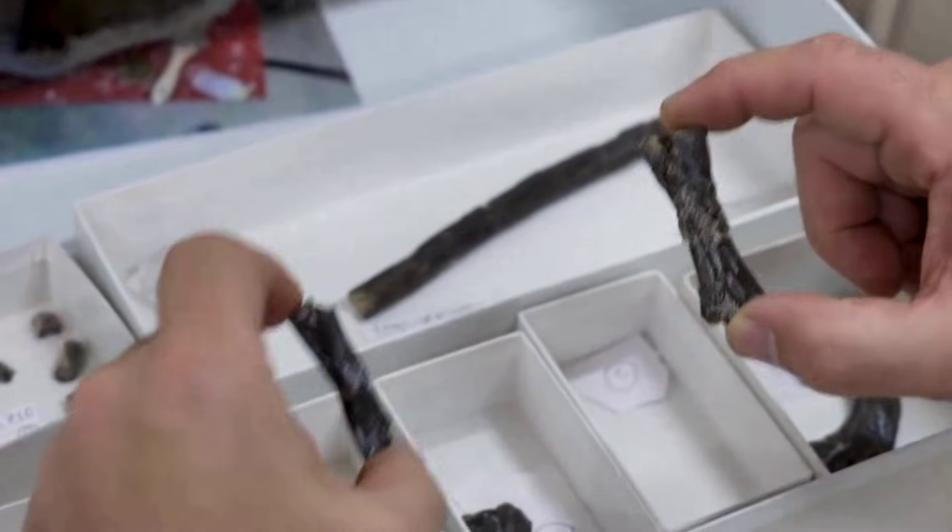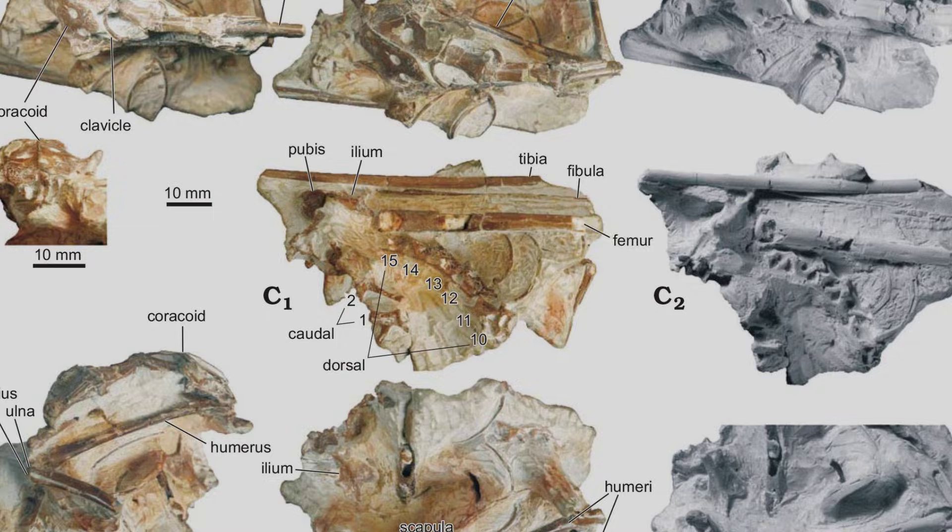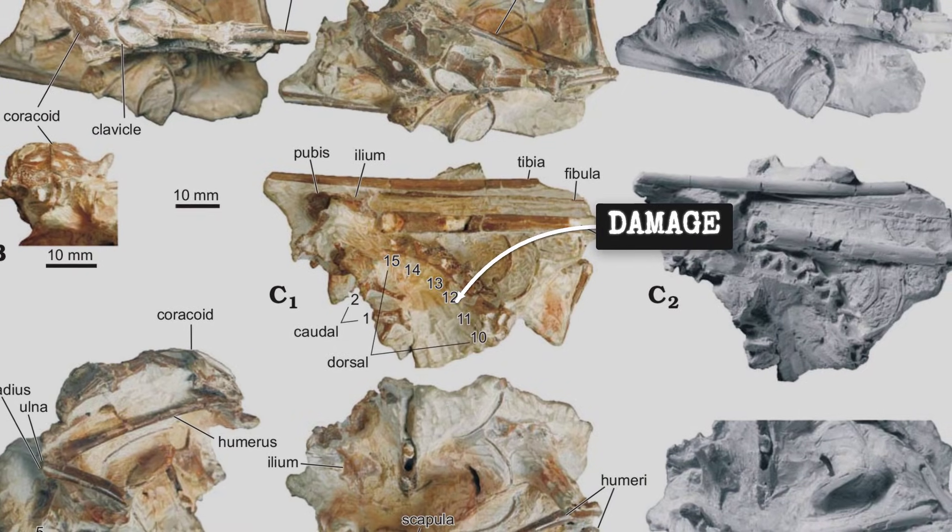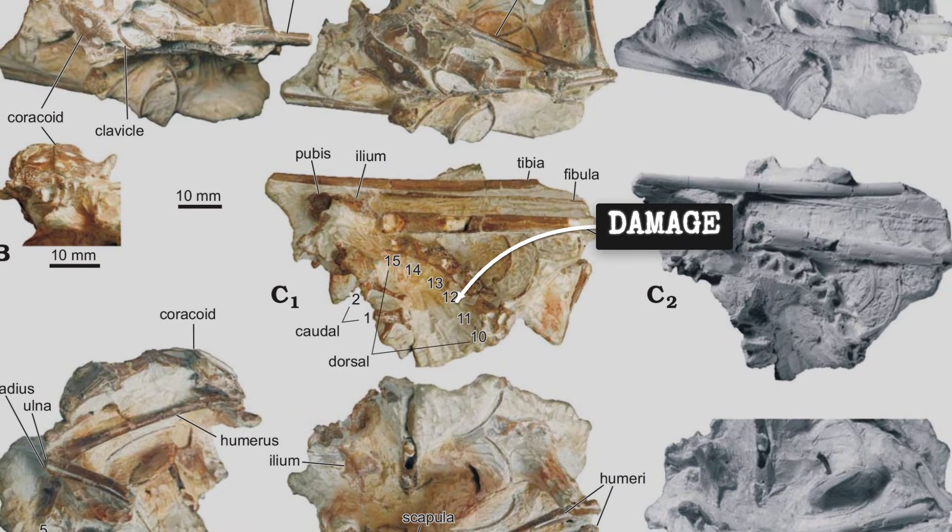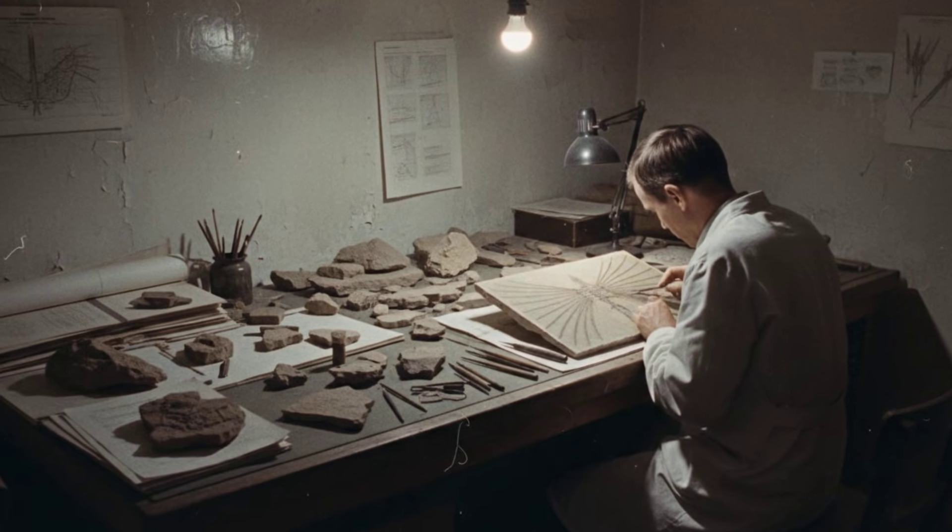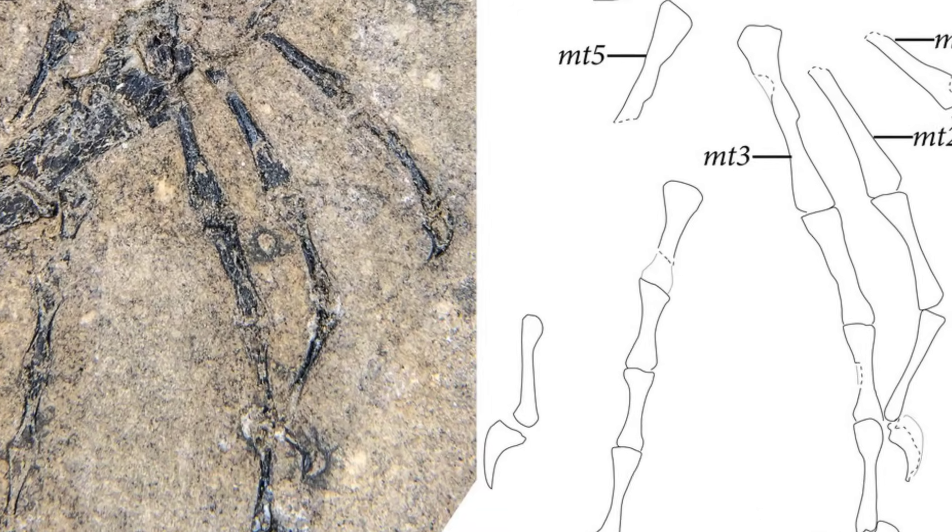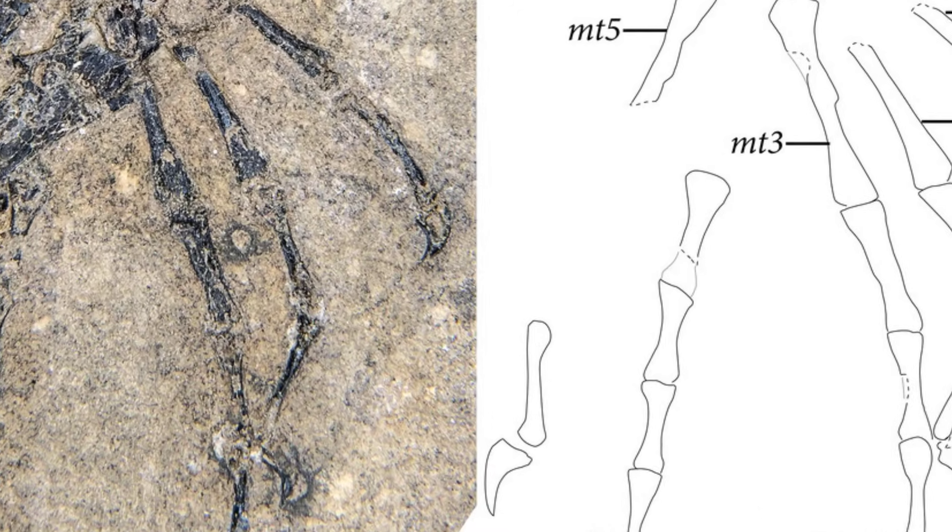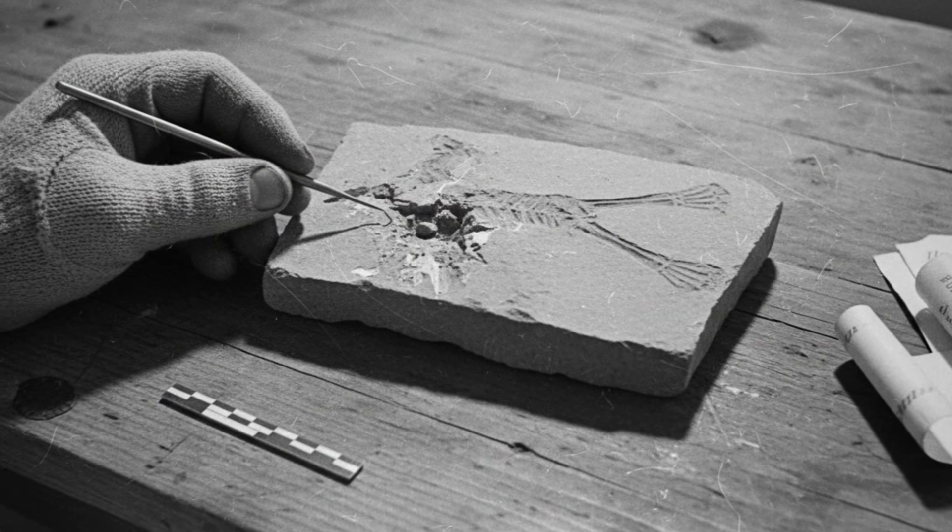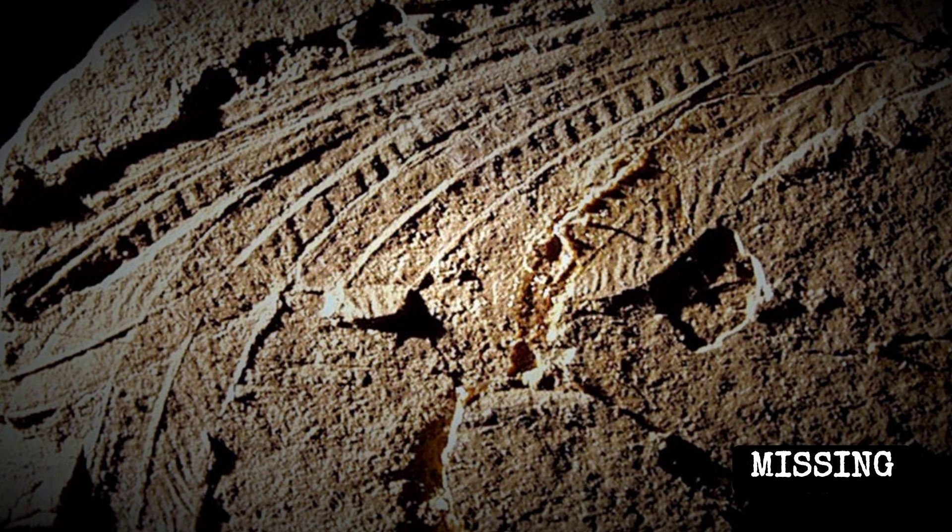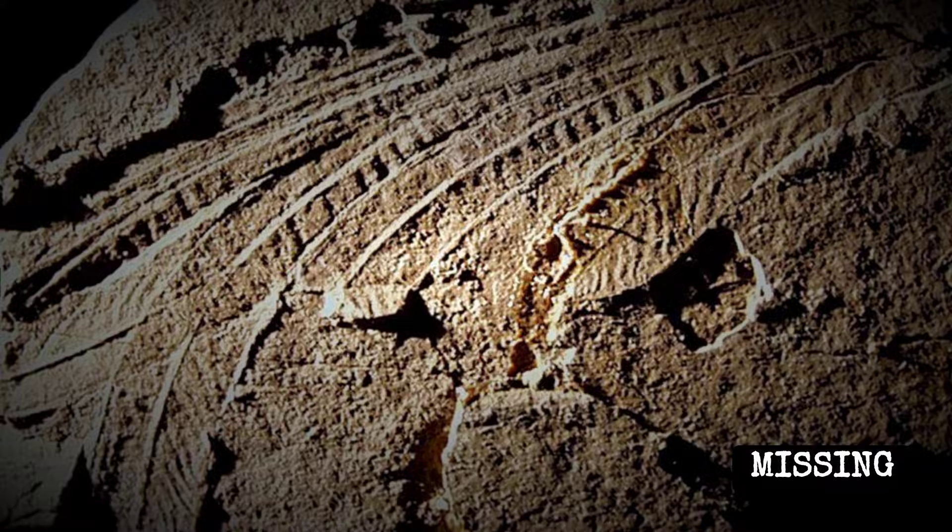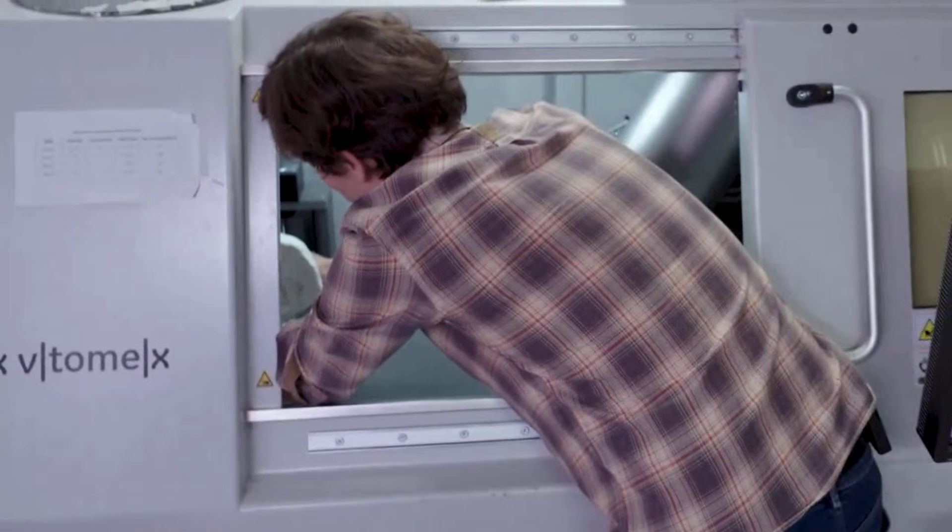By the time Western researchers finally got access to the specimen in the early 2000s, the fossil had become damaged during preparation. Whoever cleaned the rock around the skeleton in the 1970s chiseled away parts of the slab that might have contained crucial evidence. Parts of the forelimbs are gone. Areas around the chest were destroyed. The very regions that would tell us how this animal actually flew are missing. Which means we are stuck doing forensic reconstruction on a fossil that was partially obliterated by a Soviet rock chisel.